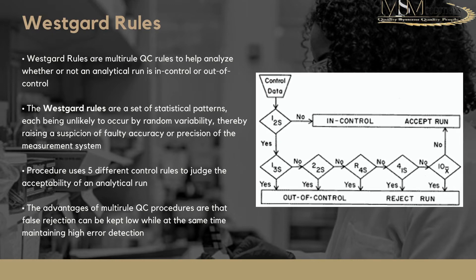Westgard rules are multi-rule QC rules used to analyze whether an analytical run is in control or out of control. They are a set of statistical patterns, each being unlikely to occur by random variability, thereby raising a suspicion of failed accuracy or precision. Because some error is random, when you get a failed QC result you would first repeat the run to rule out random error. If it still fails, you analyze the results, plot the data, and determine whether you have an accuracy or precision problem before performing a root cause analysis.